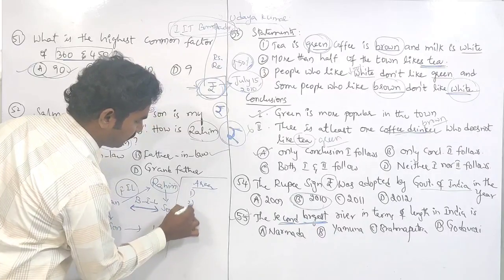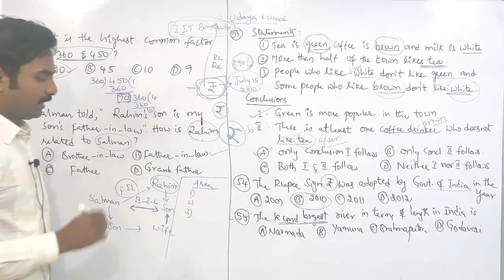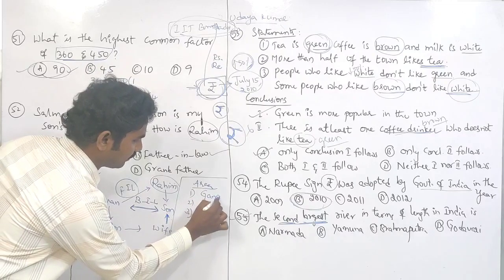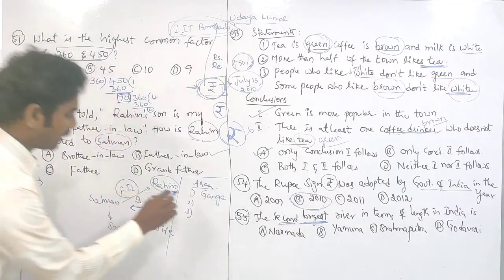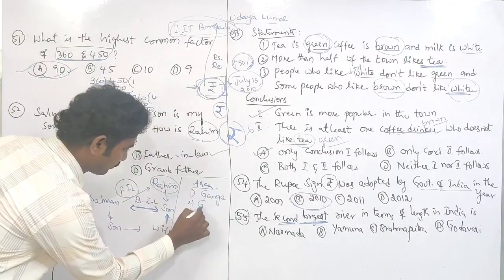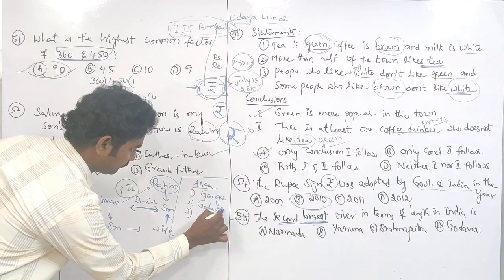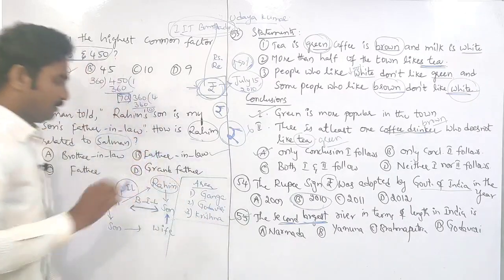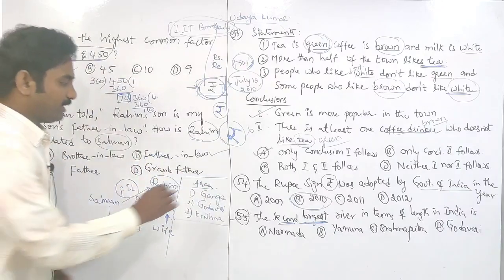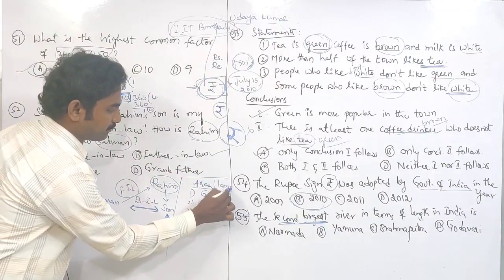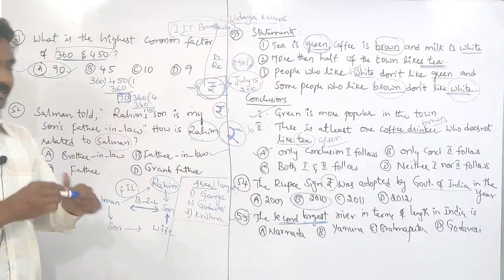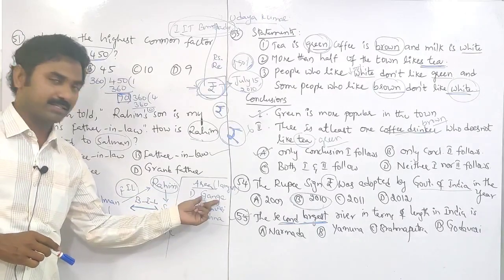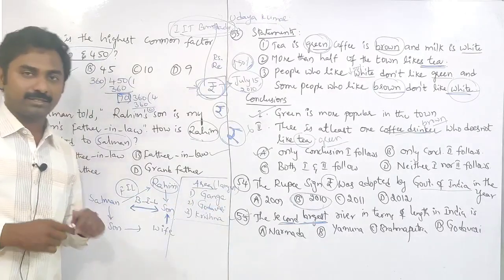Area-wise, the top three rivers are: first is Ganga, second is Godavari, and third is Krishna. So the largest Indian rivers by area are Ganga, Godavari, and Krishna — first Ganga, second Godavari, third Krishna.